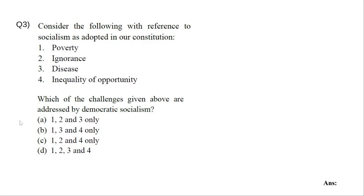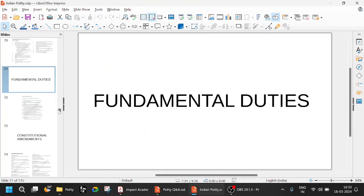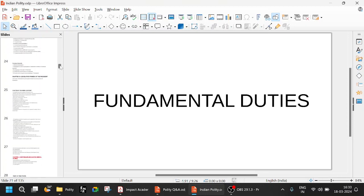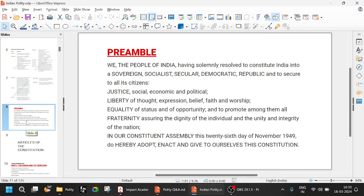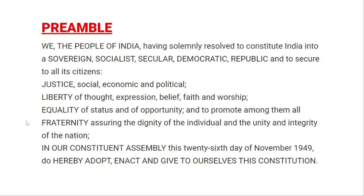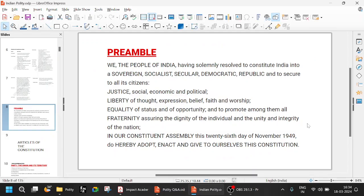Consider the following with reference to socialism as adopted in our constitution. If you are talking about socialism, it will be in the Preamble. The Preamble is very important — frequently questions are asked based on it. The Preamble says: 'We the people of India, having solemnly resolved to constitute India into a Sovereign, Socialist, Secular, Democratic Republic.' Sovereign and Democratic Republic were there from the beginning, but Socialist, Secular, and Integrity were added with the 42nd Amendment Act.